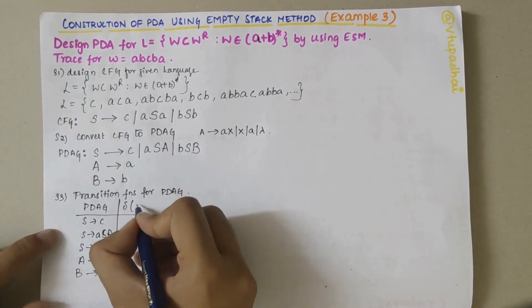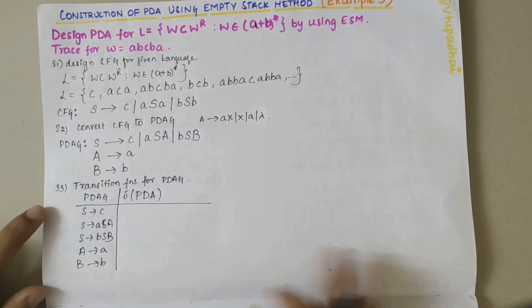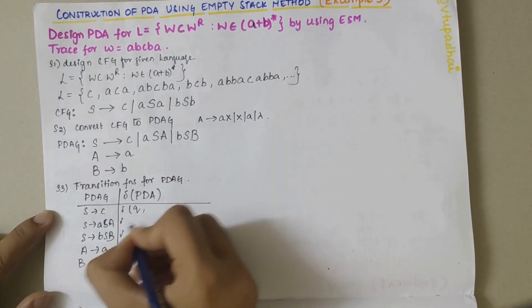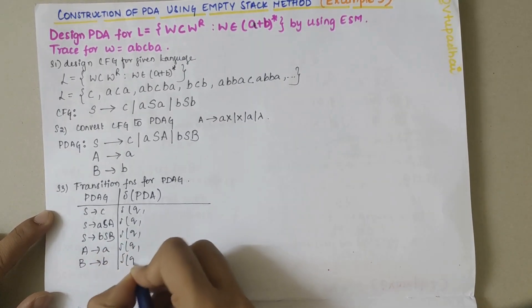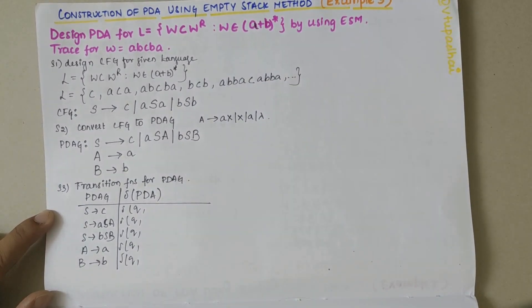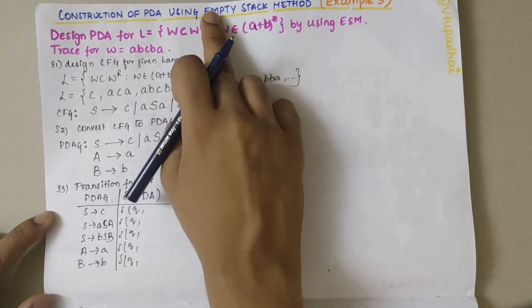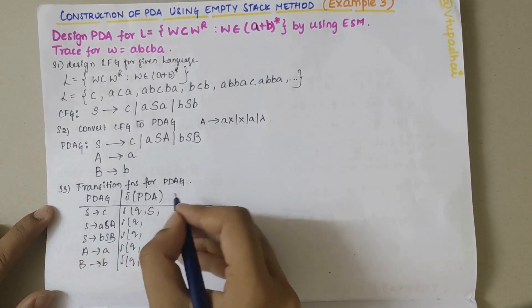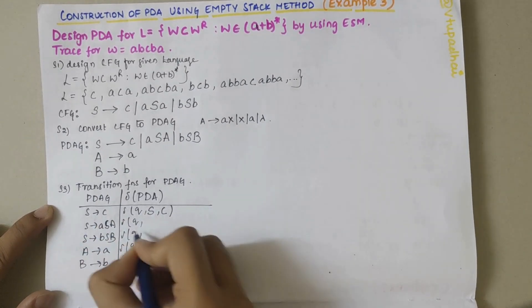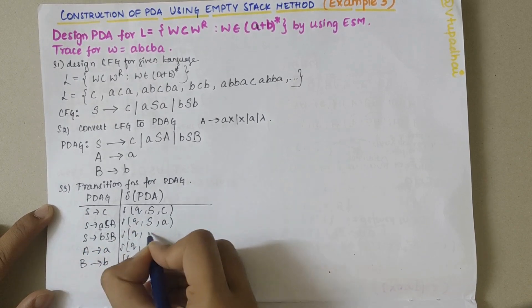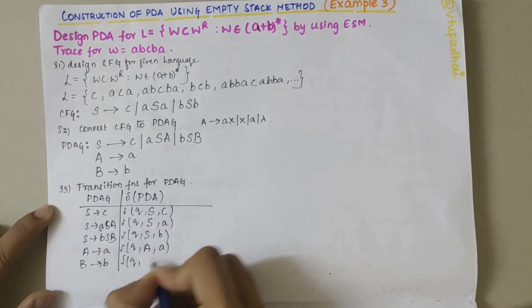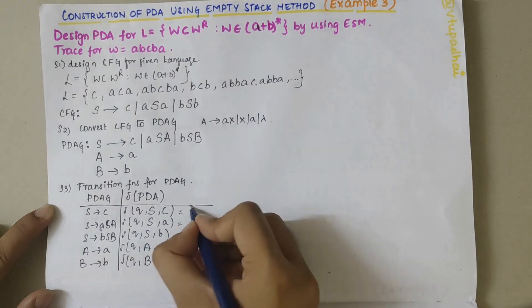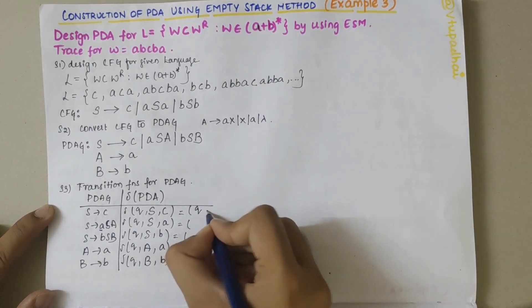Now I'll write the PDA transition functions. In the empty stack method, all transitions stay in the same state Q — that's the key point about PDA design using ESM. For each production, with S on top of stack: reading C gives λ on stack, reading A gives S capital A remaining, reading B gives S capital B remaining. For A → a and B → b, reading the terminal pops the stack symbol.